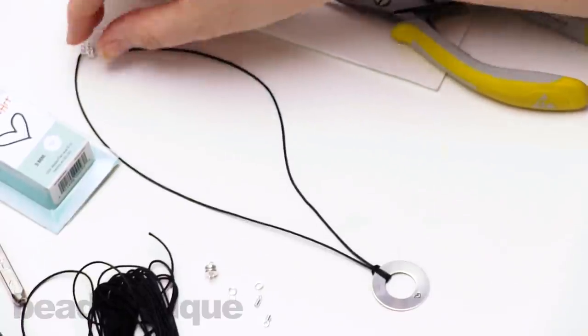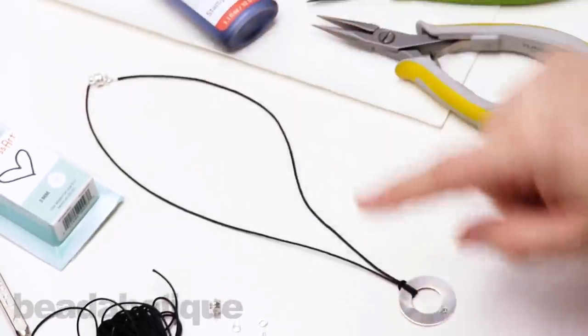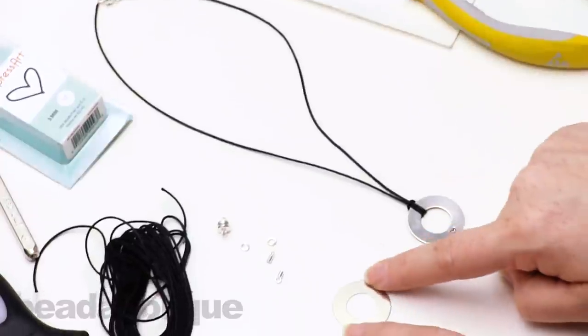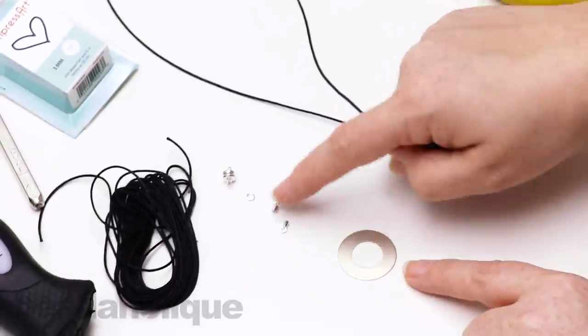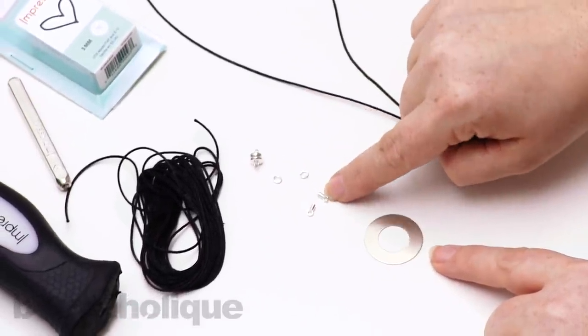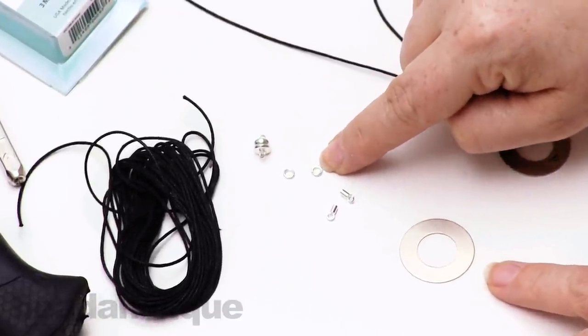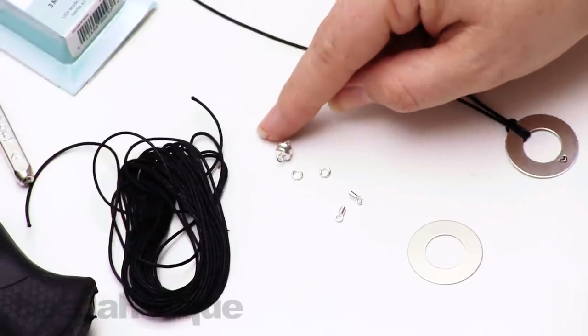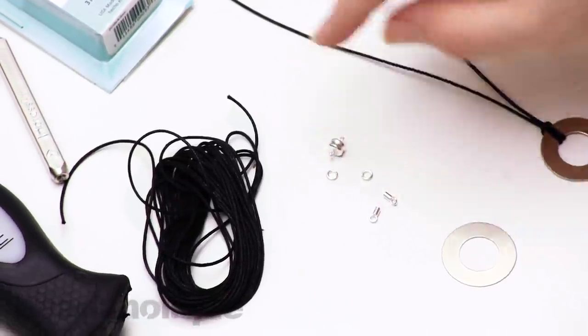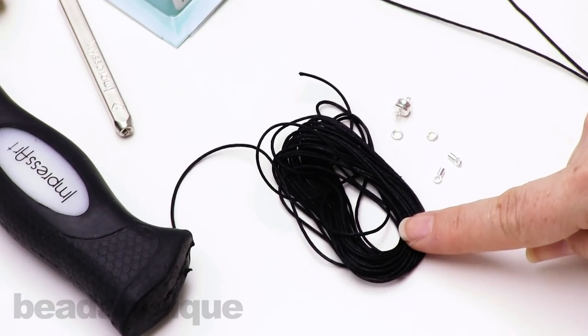But to complete this project here's what you'll need. You'll need your stamping donut ring right here, and then I have two crimp ends with loops, two four millimeter 20 gauge jump rings, I have my magnetic clasp, and my one millimeter cotton cord.